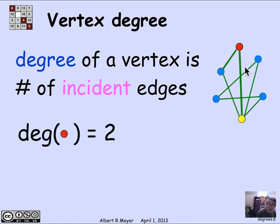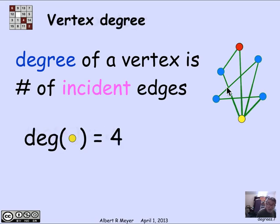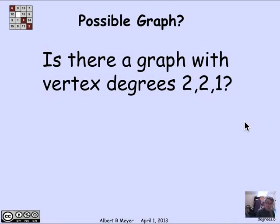Let's look at the red vertex. There are two edges incident to the red vertex, so its degree is 2. Let's look at the yellow vertex. Here there are four edges incident to the yellow vertex, so its degree is 4.